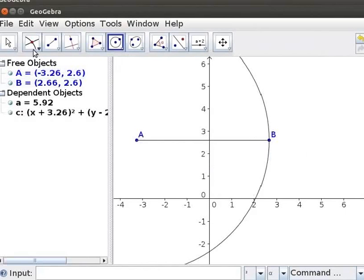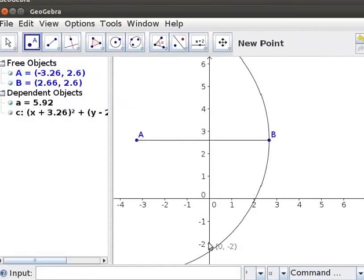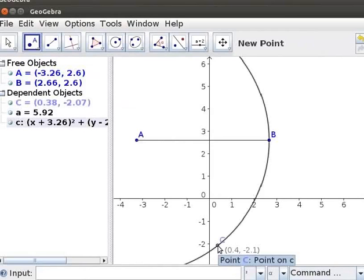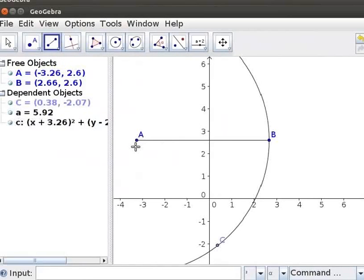Select the New Point Tool from the Toolbar. Click on the Circumference as Point C. Let us join A and C. Select the Segment Between Two Points Tool. Click on the Points A and C.